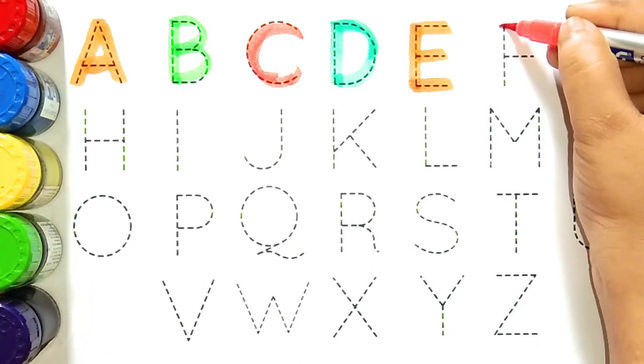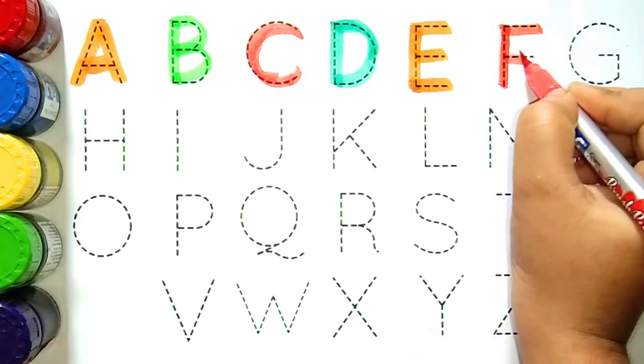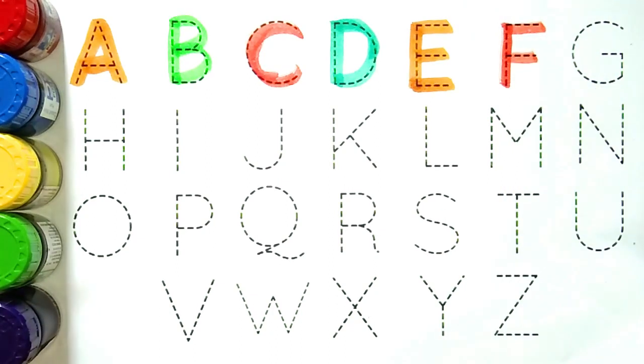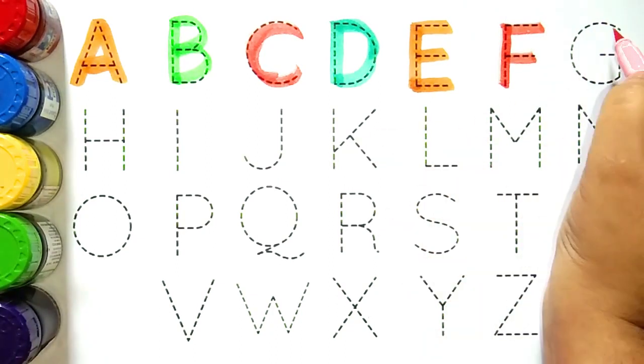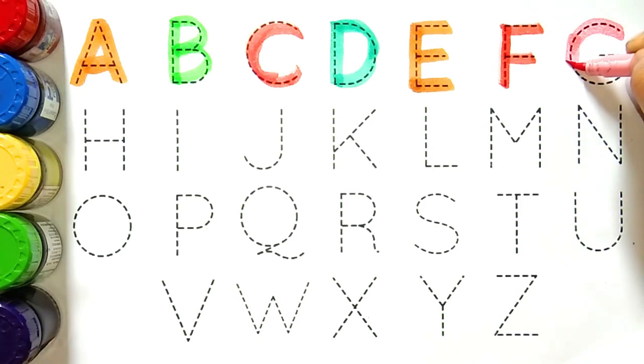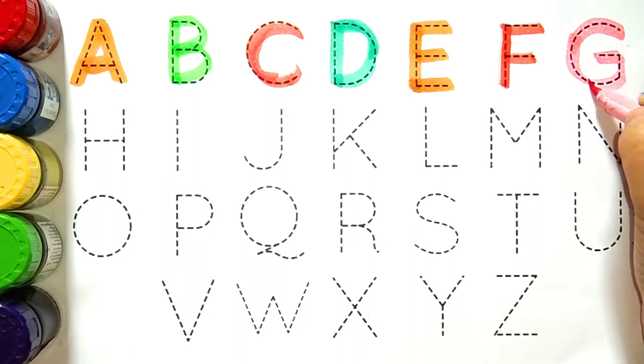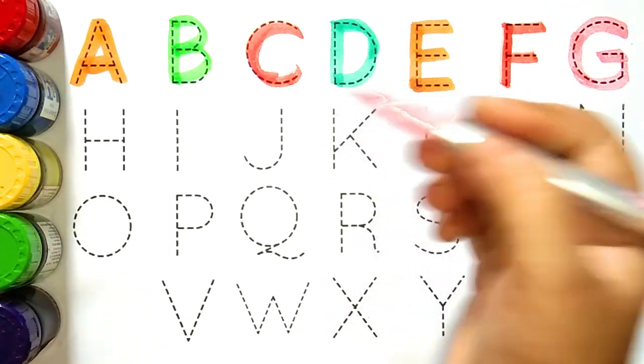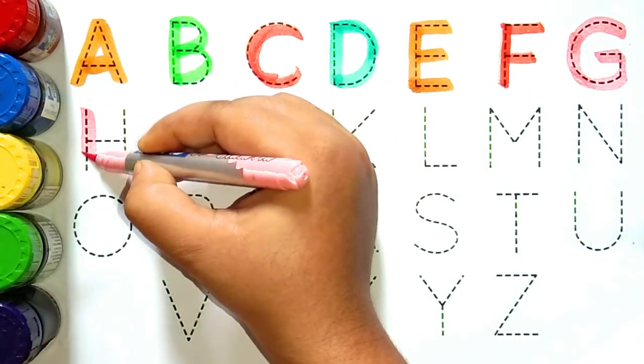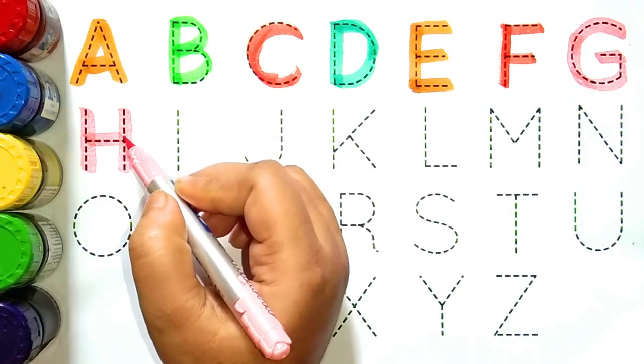Deep yellow color. E, E for year. E for kya hootahe bacho, E for hotahe year. Orange color. F, F for frog. F for kya hootahe bacho, E for hotahe frog. Light pink color.